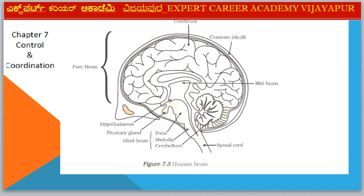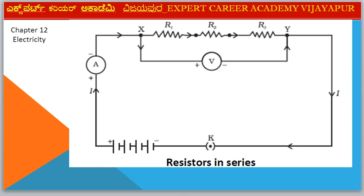Next diagram — Chapter 7: Control and Coordination. Diagram: Human Brain. Parts include Cerebrum, Midbrain, Forebrain, Medulla, Hypothalamus, and Spinal Cord. Chapter 12: Electricity — Diagram: Resistors in Series (R1, R2, R3).